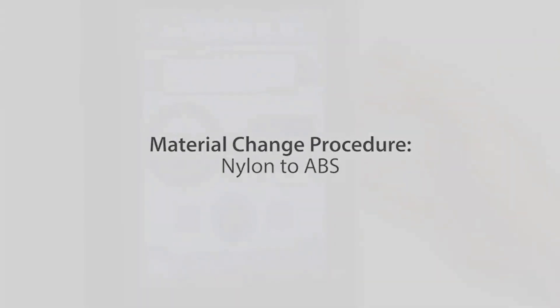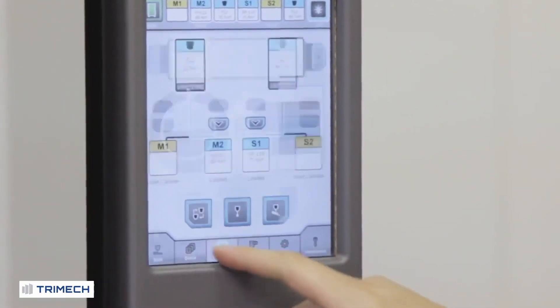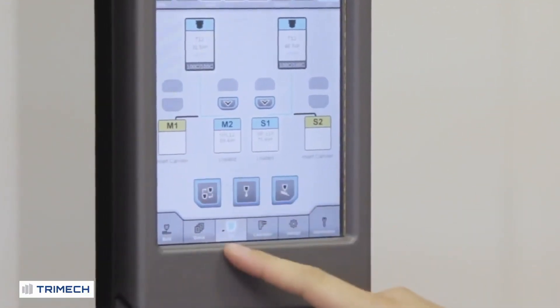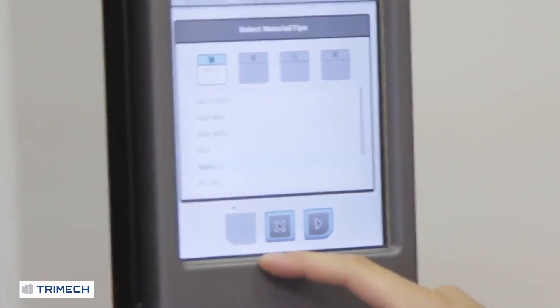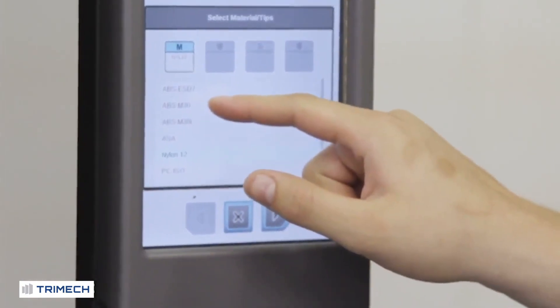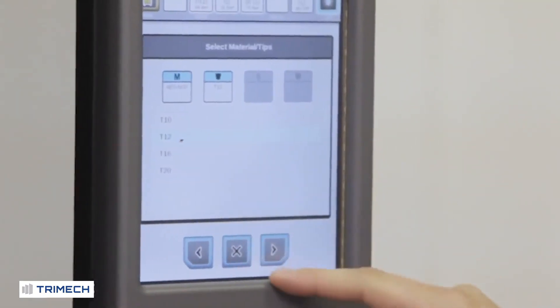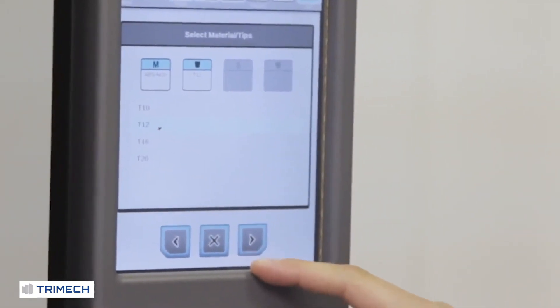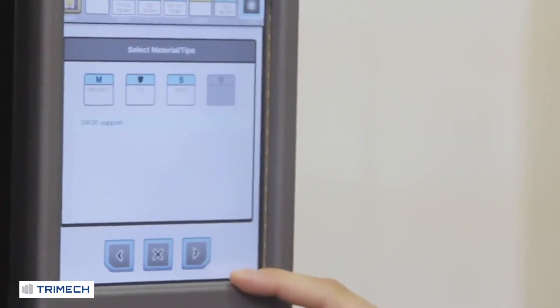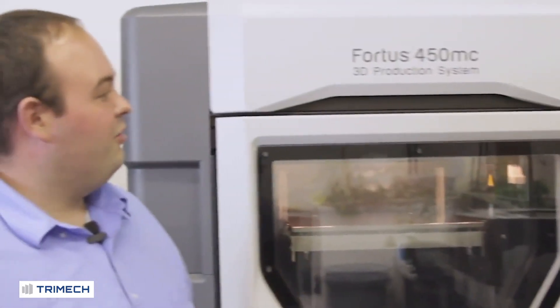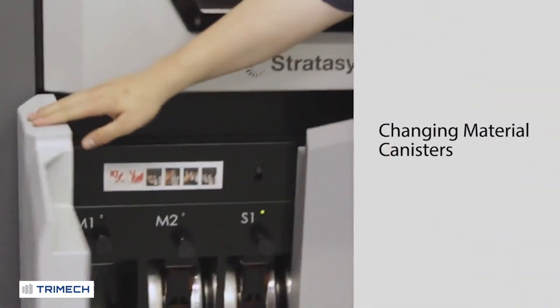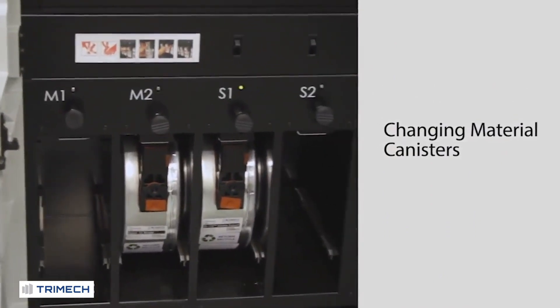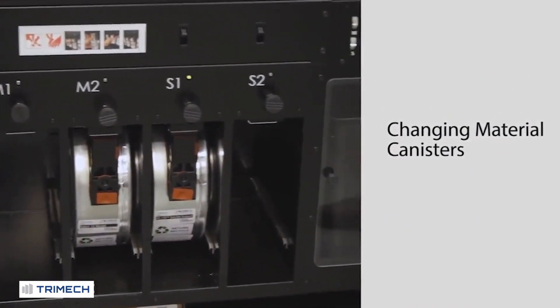So here we are on our main screen and we're going to change tips. We're going to run the wizard. So right now we're running nylon 12 and we're going to run ABS M30. We're going to run on a T12 tip, which means 7,000 layer thickness. And that's our 30 support as well. So at this point, the printer is going to unload the material from the tips and it's going to move it back enough to where we can make our changes. It looks like our material is done unloading from the tips. So let's go unload the canisters from the machine.